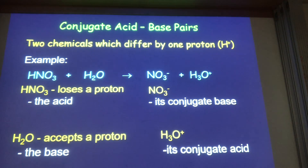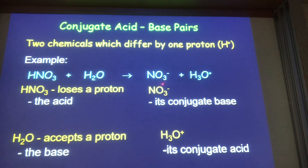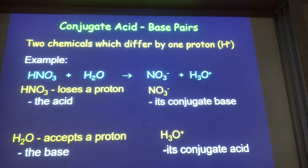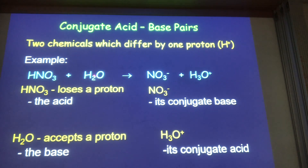Effectively, in any simple acid-base reaction there are two pairs of substances that differ by a single proton. The reactant with the extra proton is the acid, and the reactant with one less proton is the base — turning into the conjugate base and conjugate acid respectively.